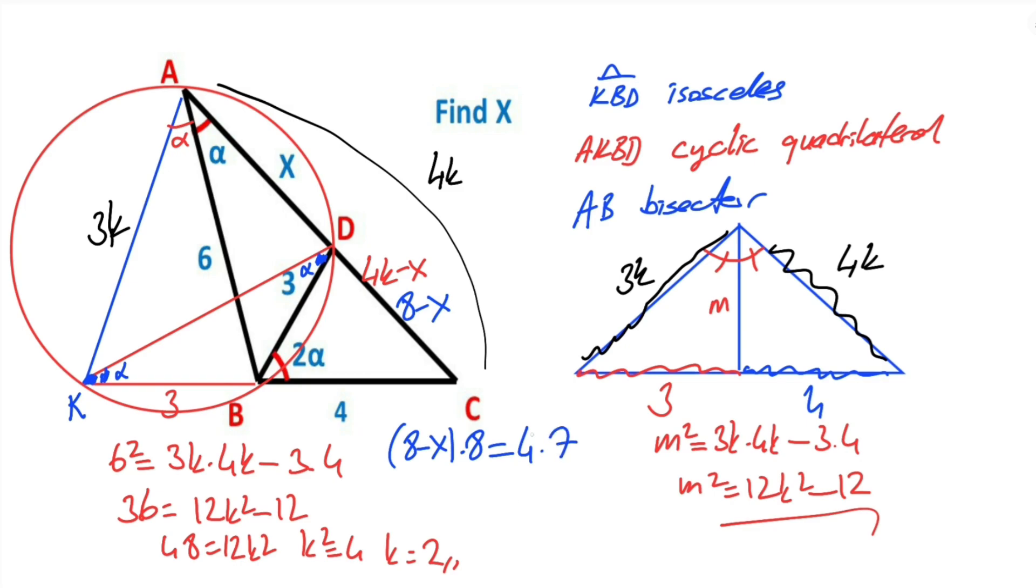Let's simplify the expression. 16 minus 2x equals 7, so 9 equals 2x. Therefore x equals 4.5 units.